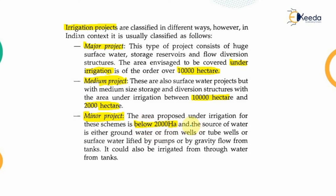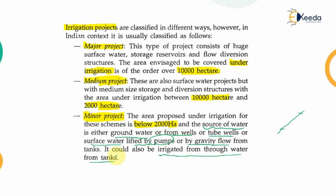For minor irrigation projects, the source of water may be either groundwater — from wells or tube wells — or surface water from rivers and other water bodies, which can be lifted by pumps or flow by gravity due to the difference in elevation between two locations. Minor irrigation projects can also be irrigated from water tanks.